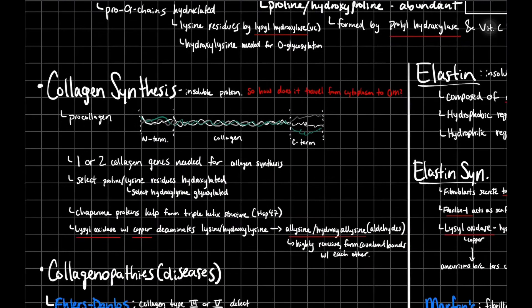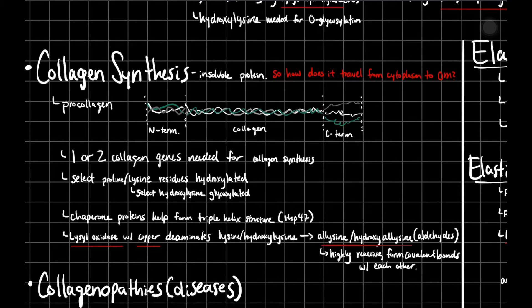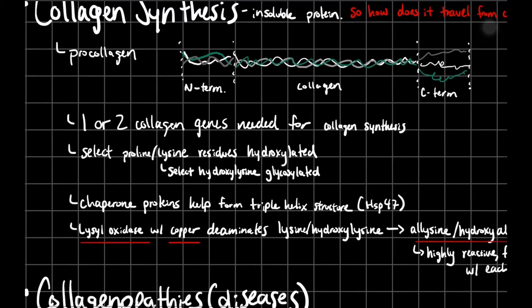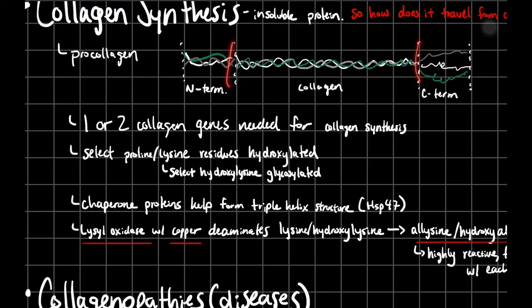Moving on to collagen synthesis. Collagen is going to be an insoluble protein, but your cell itself and where it makes proteins is actually very soluble. It's very hydrophilic - it's a wet environment. So how does it travel from your cytoplasm to your outer membrane where you have that collagen? Well, first you synthesize procollagen. Procollagen is going to be more hydrophilic because of this N-terminal and C-terminal. These N- and C-terminals have disulfide bonds and things like that to help make it more hydrophilic. Then you're going to cleave this off when you reach the outer membrane, so you get that active form of collagen.